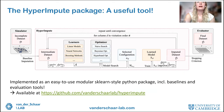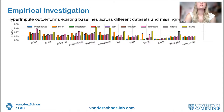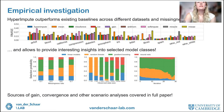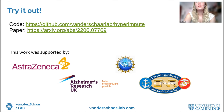Our paper comes with a Python package implemented as an easy-to-use modular scikit-learn-compatible package that includes other baselines and evaluation tools. In our empirical investigations we show that HyperImpute outperforms existing baselines across different datasets and different missingness mechanisms, and we also show that HyperImpute allows us to find interesting new insights into what model classes are selected as we vary the missingness rate. Sources of gain, convergence, and other scenario analyses are covered in the full paper. Please check out the paper and the code available on our GitHub.